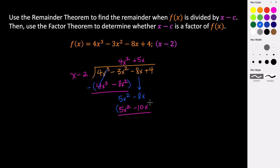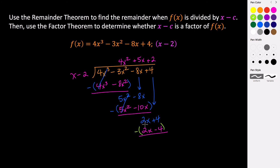We subtract again, distributing the negative through — those cancel, and negative times negative 10x is positive 10x. So negative 8x plus 10x is 2x, and we bring down the plus 4. Lastly, what do we multiply x by to get 2x? That's positive 2. So 2 times x is 2x and 2 times negative 2 is negative 4. We subtract: 2x minus 2x is 0, and the negative gets distributed through so this becomes positive 4, and 4 plus 4 is 8. We can see this remainder has a lower degree than our divisor, so x can't go into it anymore — we get a remainder of 8, which is exactly what we got when we evaluated f at 2: f of 2 equals 8.